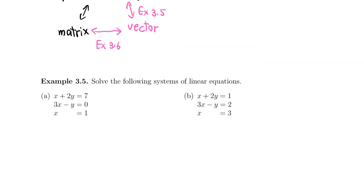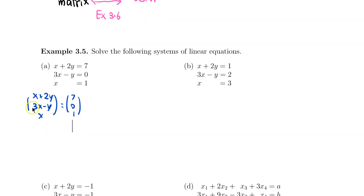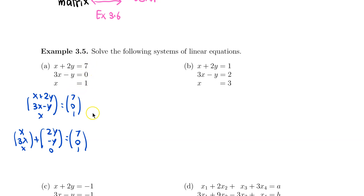If I want to solve this system of linear equations, I can actually turn it into a vector equation by writing it as a vector (x + 2y, 3x − y, x) that has to equal (7, 0, 1). I can rewrite the left-hand side as (x, 3x, x) plus (2y, −y, 0). This has to equal (7, 0, 1). So I can rewrite this system of equations into this vector equation.